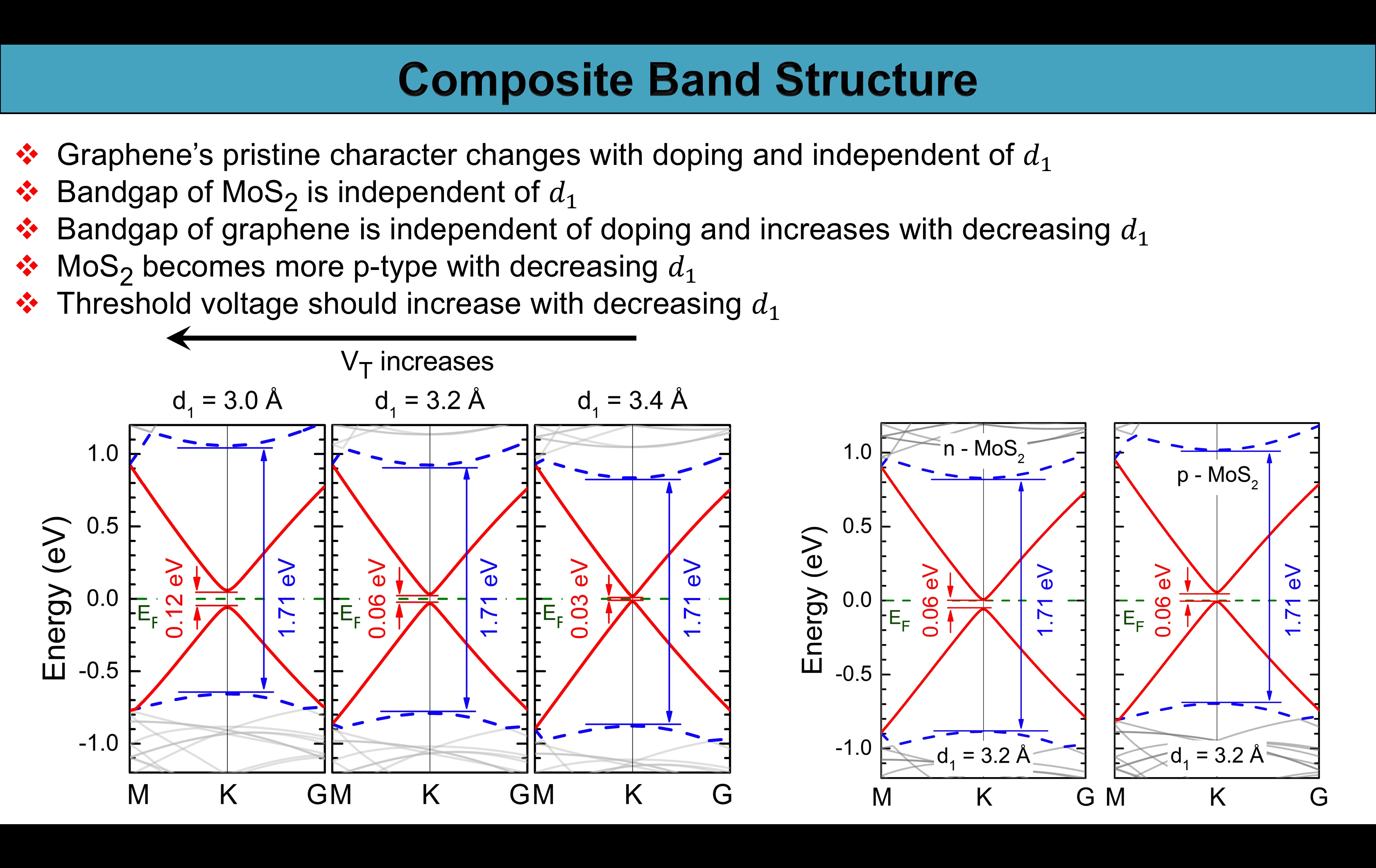Now this is the composite band structure of the aforesaid van der Waals heterostructure. Here the red bands are of graphene and blue bands are of MoS2. It is seen that the bandgap opening increases with decreasing d1 due to more on-site energy difference between the carbon lattice sites.